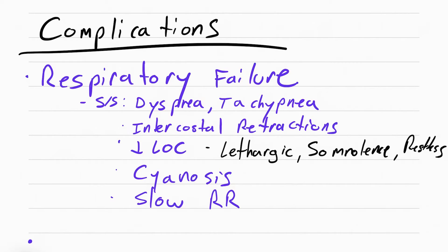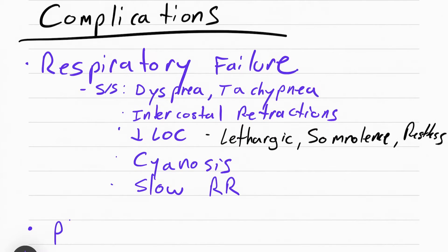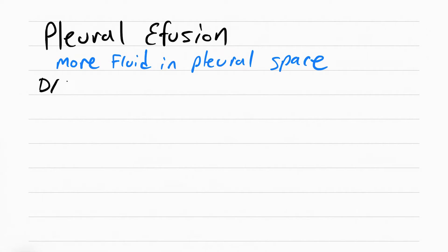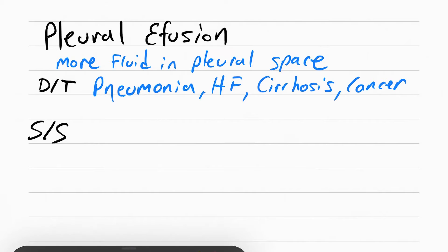If you see a patient having these symptoms, make sure you follow up. This is an emergency. The next complication is pleural effusion. Pleural effusion means there's more fluid in the pleural space than there's supposed to be. Usually this is caused by pneumonia, heart failure, cirrhosis, or cancer, but there are other reasons too.